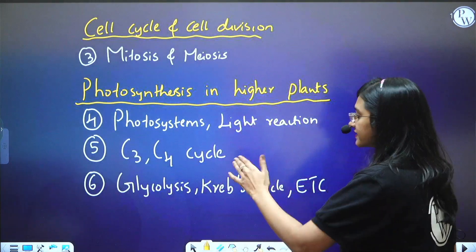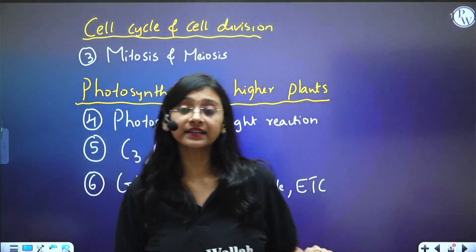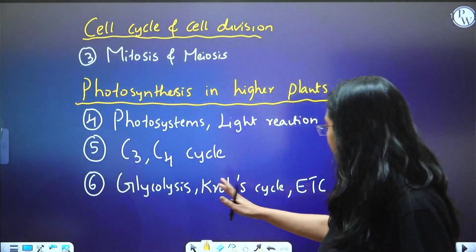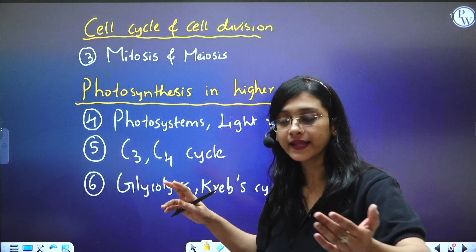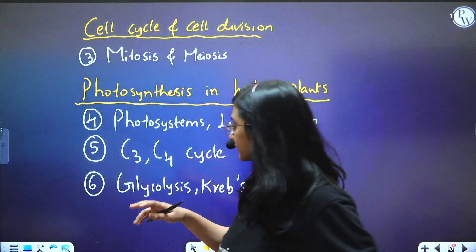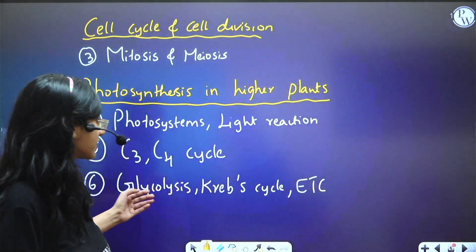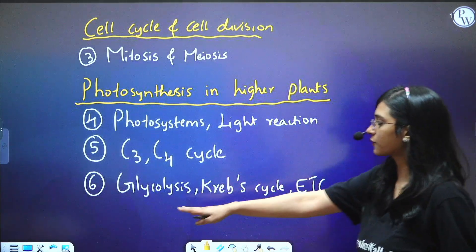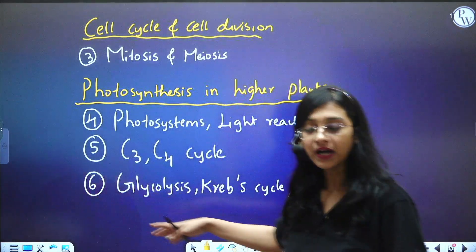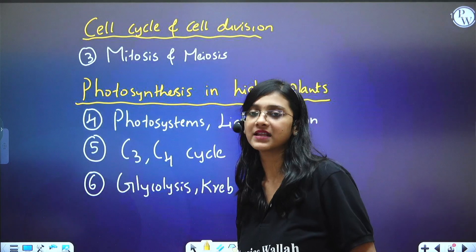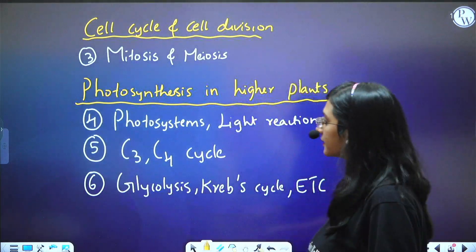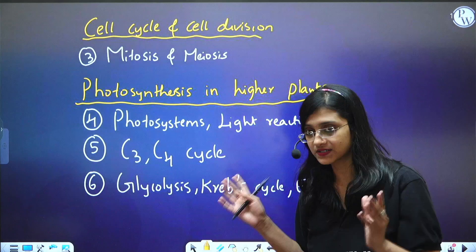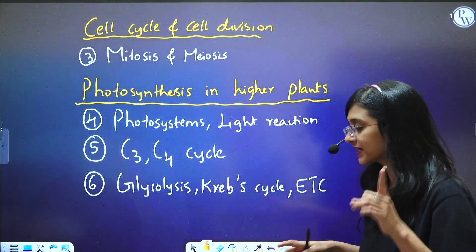According to NCERT, you have to study C3-C4 plants, and glycolysis and Krebs cycle have been asked for many years. So topics 5 and 6 together are glycolysis, Krebs cycle, and ETC (electron transport chain reaction). At least one question will be asked from this every year, so you need to know it very well. This is the sixth topic you must cover for NEET 2024.